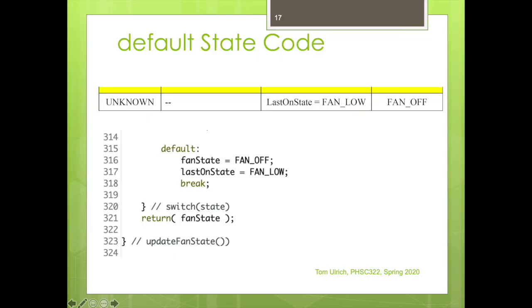And then finally, coming back here, what we want to do is if you're unknown, what we do is we set the fan state and we set the last on state. And then that ends up the outer switch statement. And then we have the return, return the fan state. So notice the fan state is not a global variable. But this function just returns the value at the end.